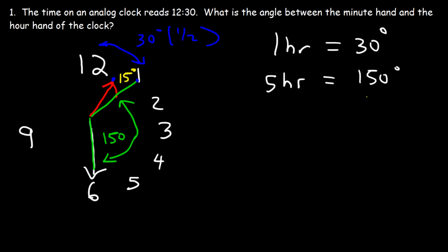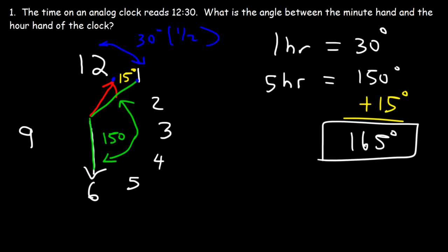So we've got to add 150 and 15. Therefore, the angle between the hour hand and the minute hand is 165 degrees, which is less than 180. Because if the hour hand was at 12 and the minute hand was at 6, that would be a straight line — that would be 180 — but it has to be less than 180. And this answer is reasonable.